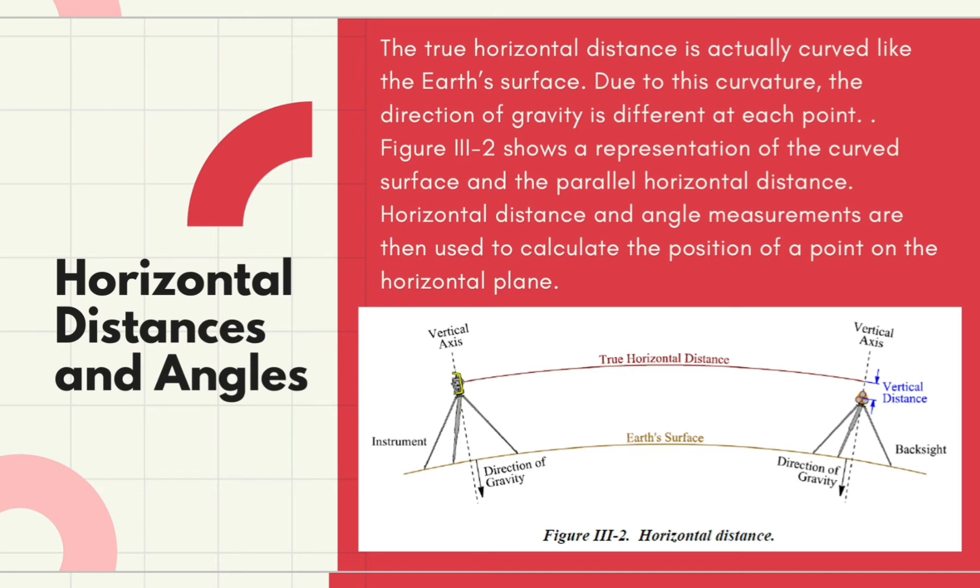Horizontal angles are measured on the horizontal plane and establish the azimuth of each survey measurement. An azimuth is a horizontal angle measured clockwise from a defined reference. Horizontal distance and angle measurements are then used to calculate the position of a point on the horizontal plane.